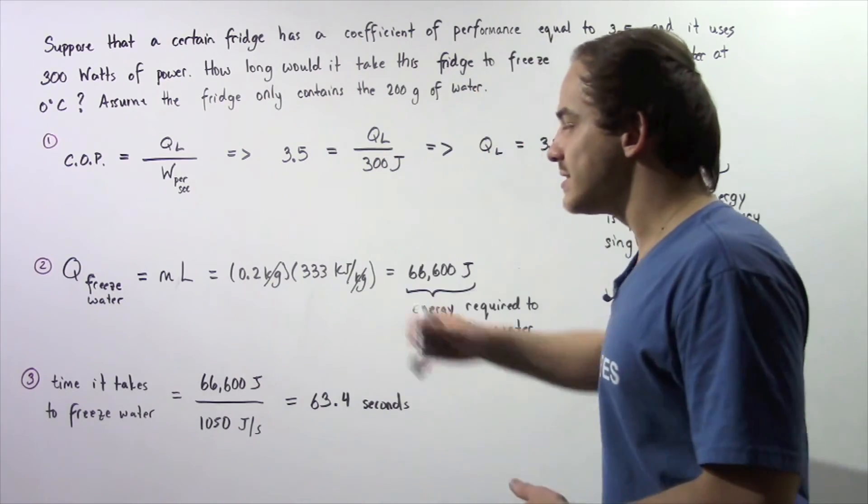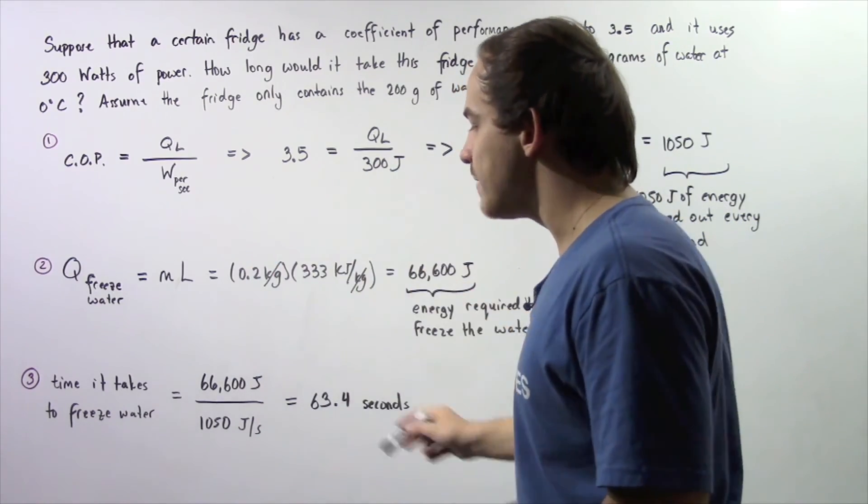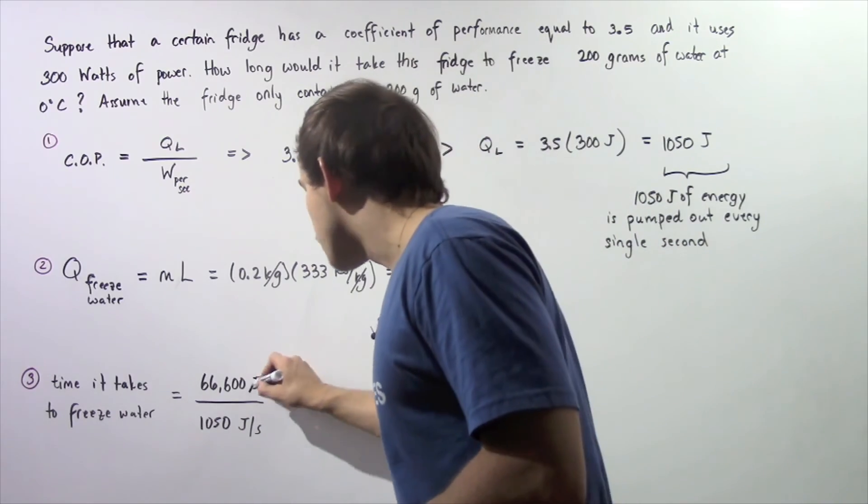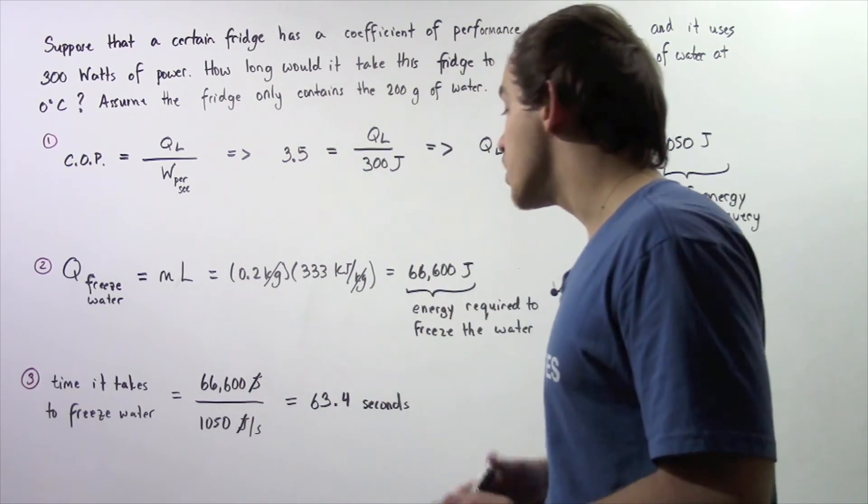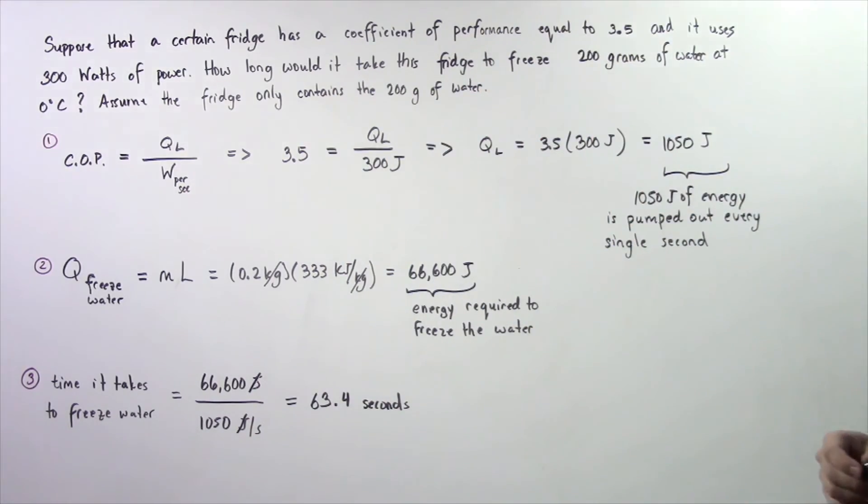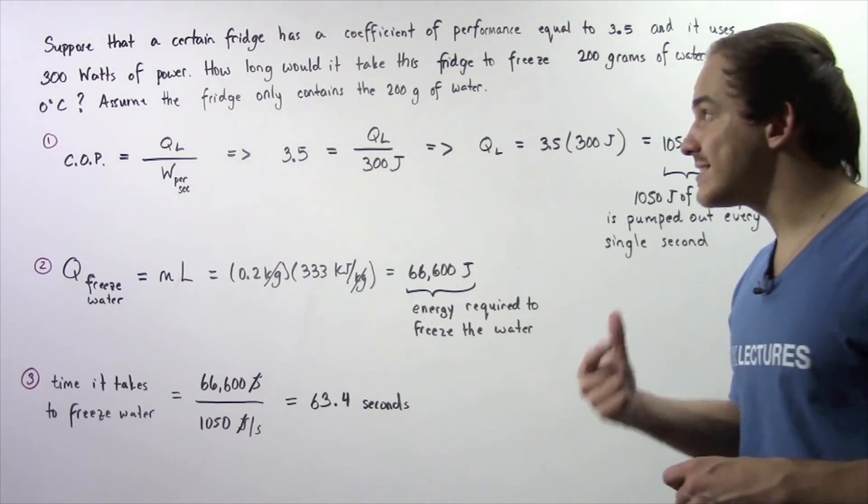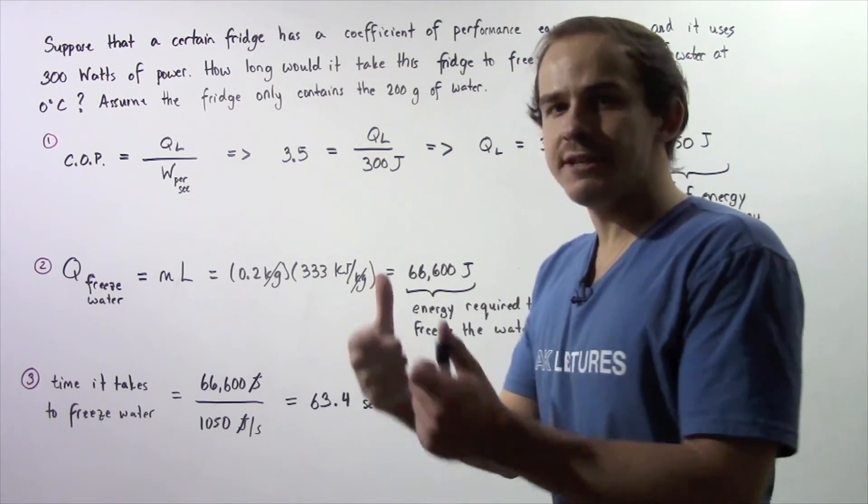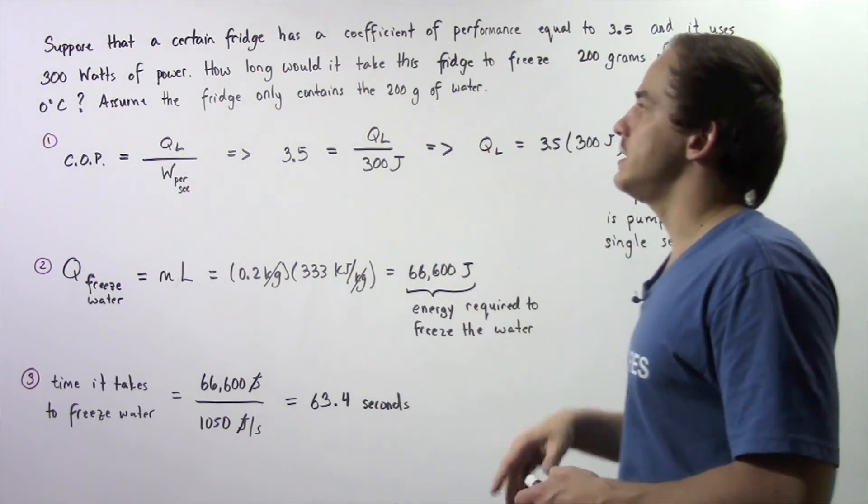So 66,600 joules divided by 1050 joules per second. Notice the joules will cancel and we're left with about 63.4 seconds. So it takes our fridge this many seconds to completely freeze this quantity of water.